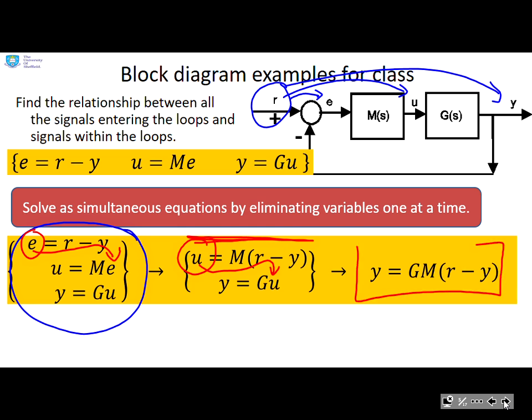And you see that now reduces me to one equation which has the input to the loop r and the variable I'm interested in y. Now I can rearrange this and I get the expression y equals gm over 1 plus gm times r.